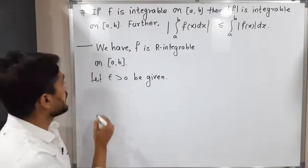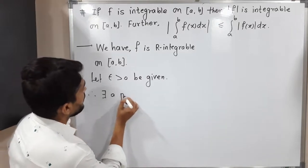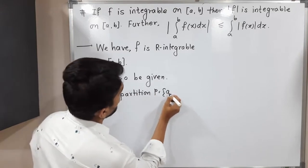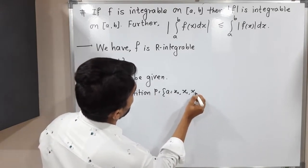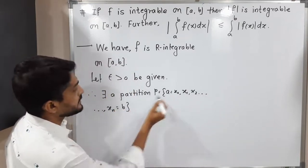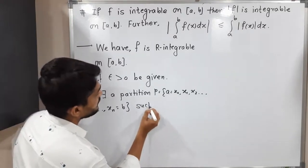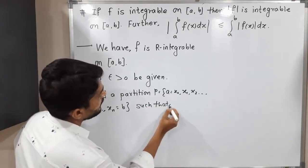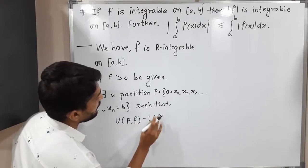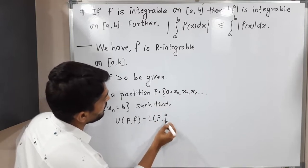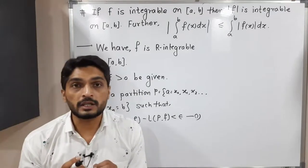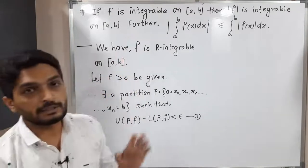Therefore, for this epsilon there exists a partition P = {a = x₀, x₁, x₂, ..., xₙ = b}, where the starting point is a and the ending point is b, such that U(P, f) − L(P, f) < ε. We will call this inequality (1). This is a very important thing we have, and we could write it by using the given information.